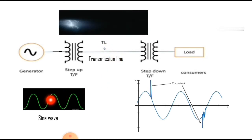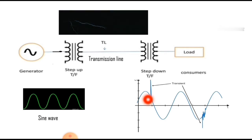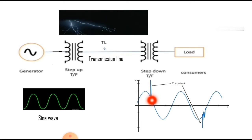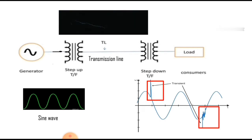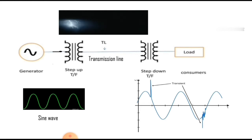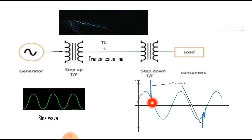When lightning strikes on the transmission line, the true sinusoidal quantity is going to be disturbed. This is the product of when the lightning strikes. The true sinusoidal quantity is disturbed at these two points, and these two points are called transients. We conclude the definition as: it is a sudden change in one steady state operating condition to another — this is one steady state condition, then a sudden change, and through to another steady state condition.